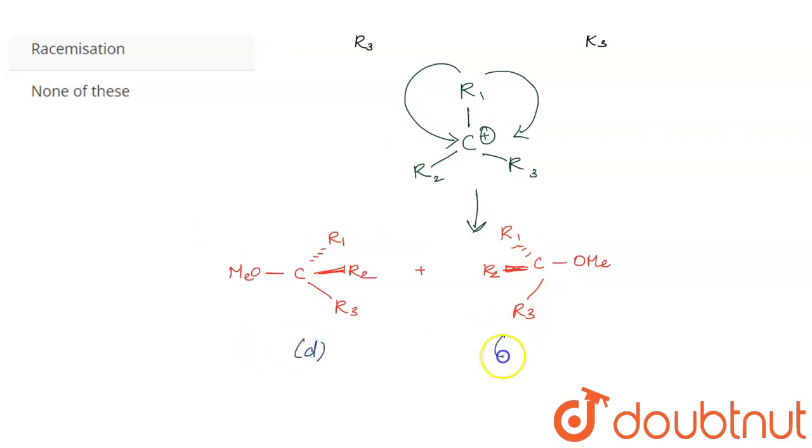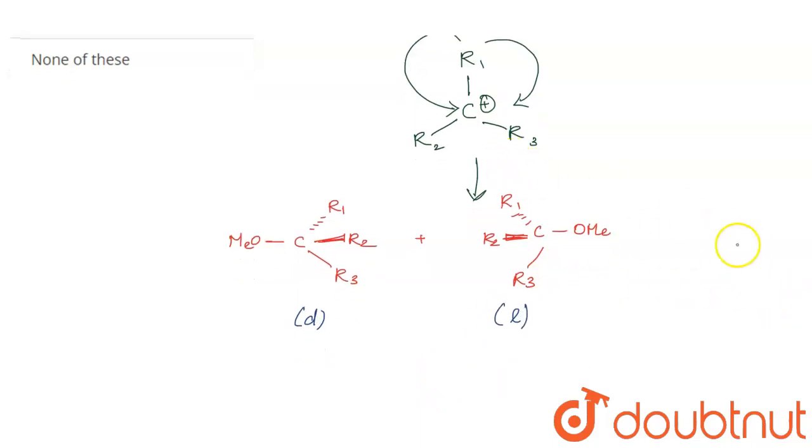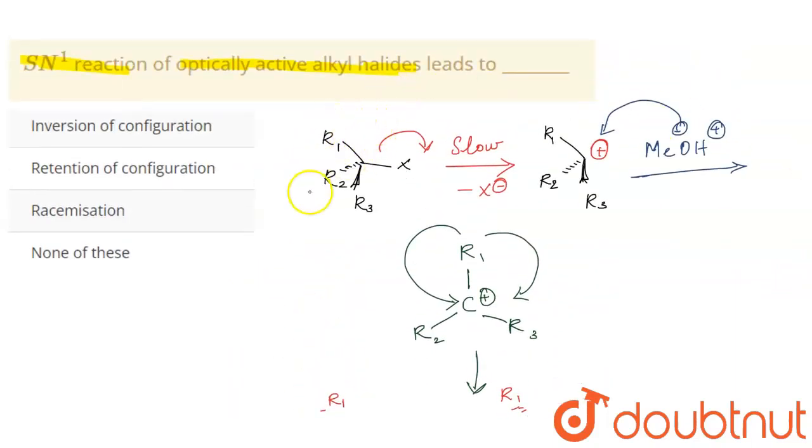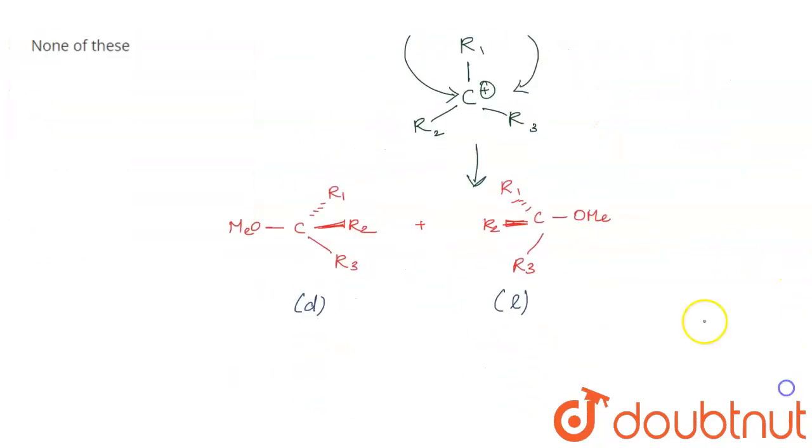So these two are exact mirror images of each other as we can see. One is dextrorotatory and another one is levorotatory. Now what can happen? We have got entirely two different isomers. We started with one isomer but we have got entirely two different isomers.